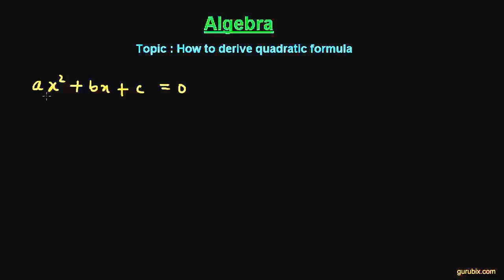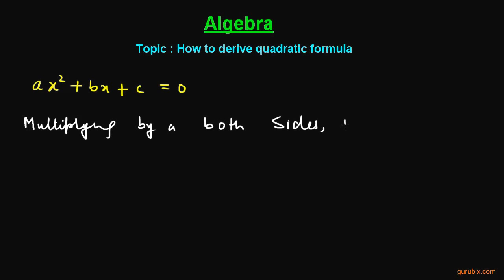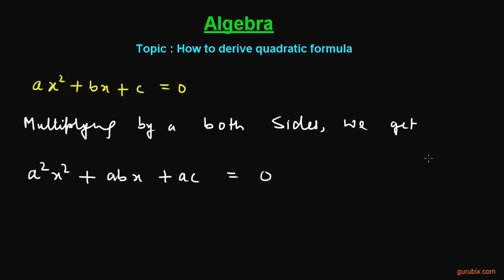First of all, we shall multiply both the terms by A. Multiplying by A on both sides, we get: A squared X squared plus ABX plus AC equals zero.